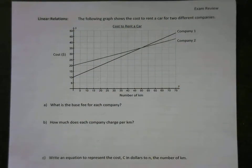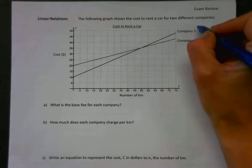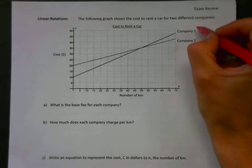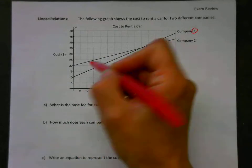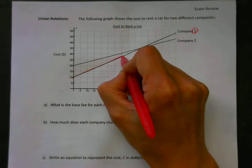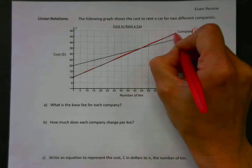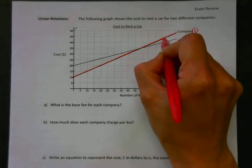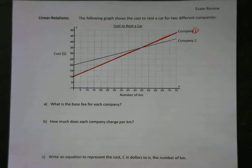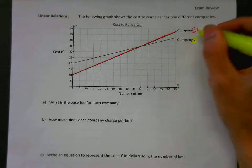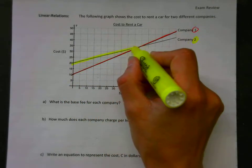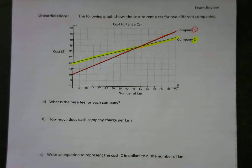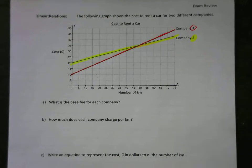Okay, so here we are with the linear relations section of the exam review. The following graph shows the cost to rent a car for two different companies. We have company number one which starts at ten dollars and goes in a straight line, and then we have company number two which starts at twenty dollars and goes up at a constant rate.